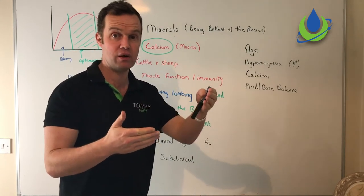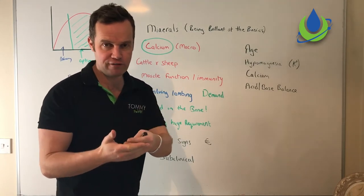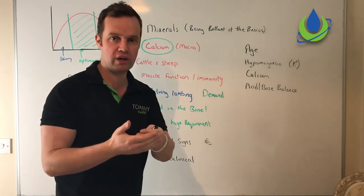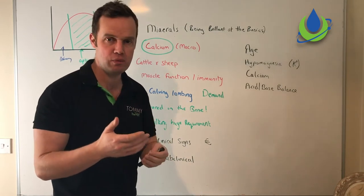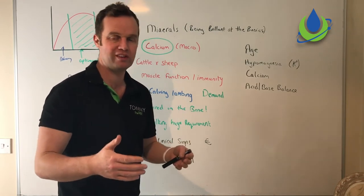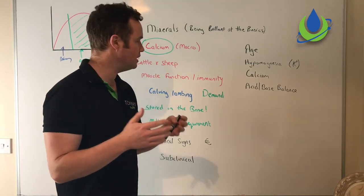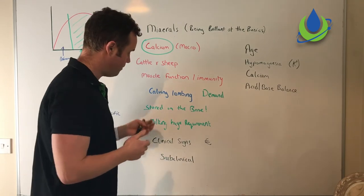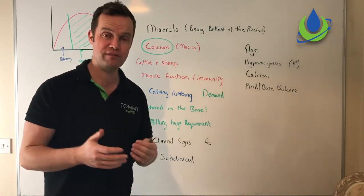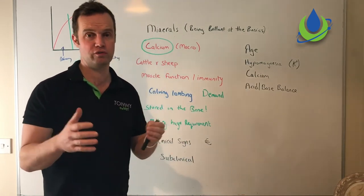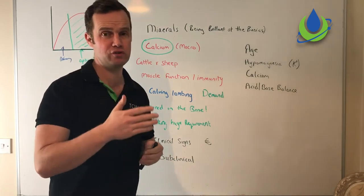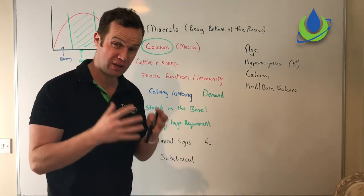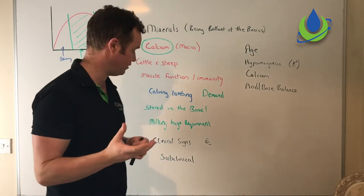Not every down cow has low calcium, but it's a key differential. Your downer cow can often have a swan neck, she'll be weak, her rumen can bloat slightly. And they're really, really an emergency - you want to get calcium into them as fast as possible. Clinical signs: a cow with milk fever has been estimated, just in euros, to cost between 300 and 500 euros per case because of the long-term effects.